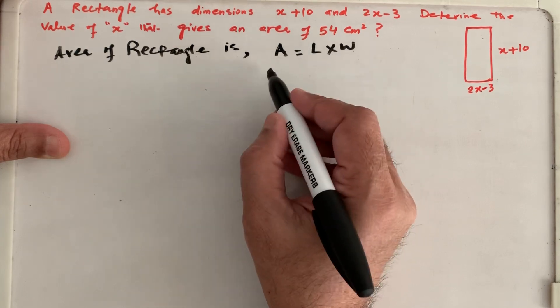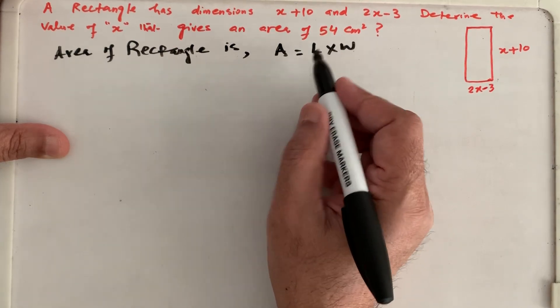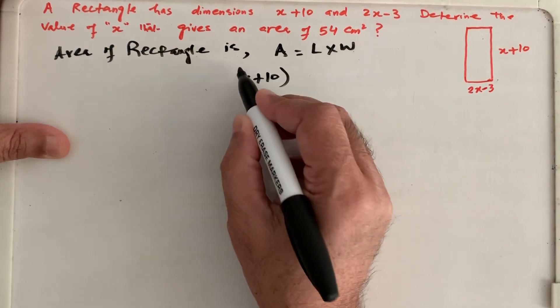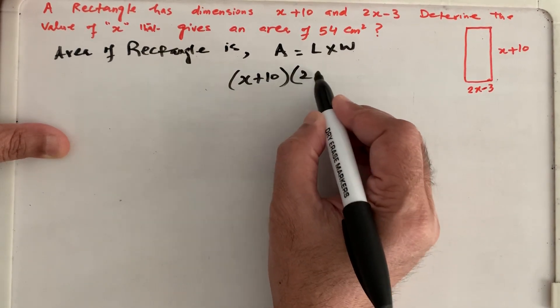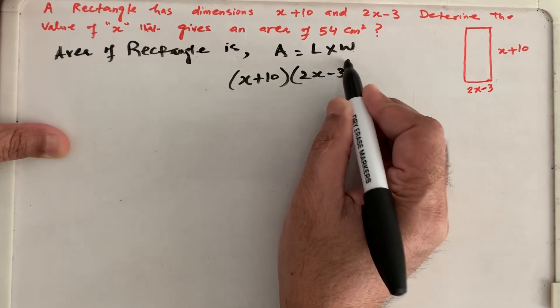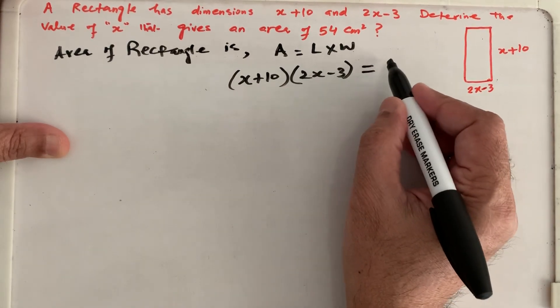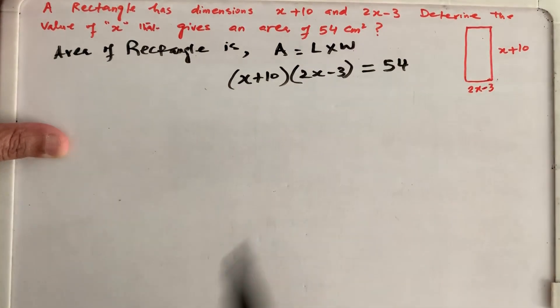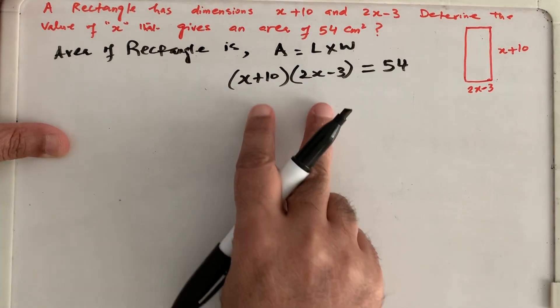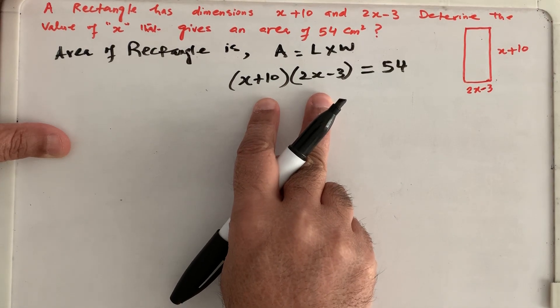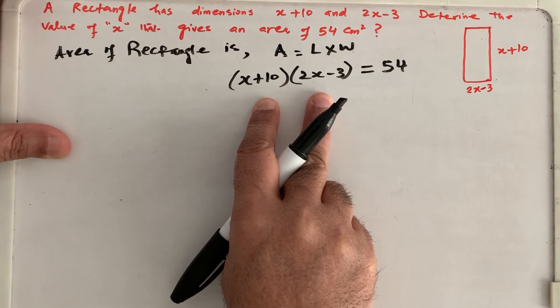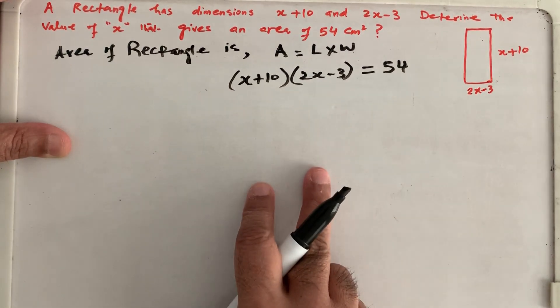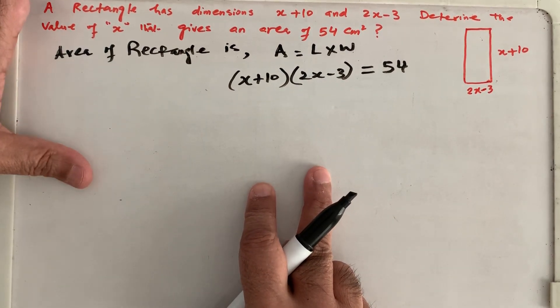And what we need is 54 cm. So length times width, length is x plus 10, times width 2x minus 3 should be equals to 54 cm square. So this is our basic equation. And when we expand these two brackets, we have the quadratic equation. And then we have to solve that quadratic equation for the value of x.